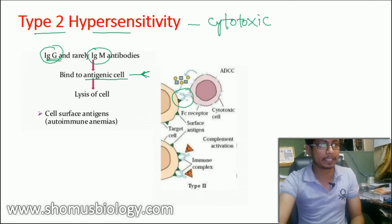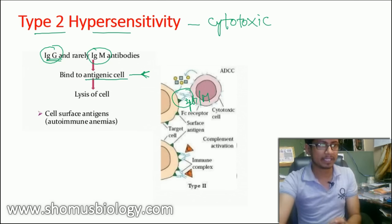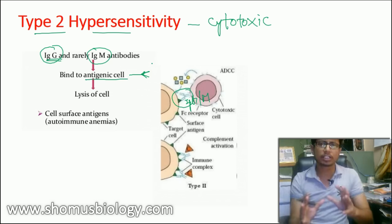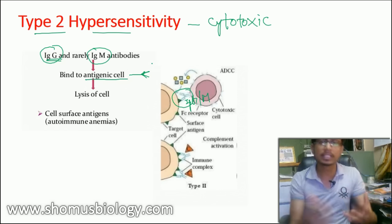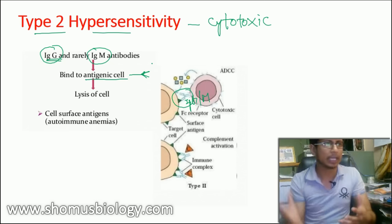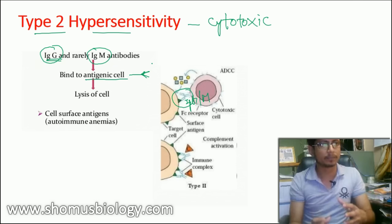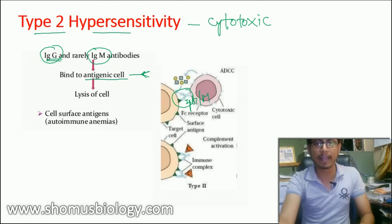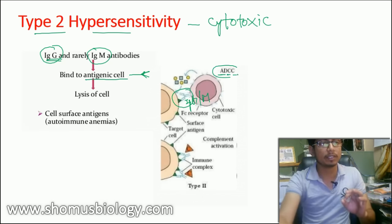Our body's cytotoxic or killer cells recognize the target cell coated with IgG or IgM, then release chemical factors to destroy it. This is the destruction of self cells — though the self cell is healthy, the destruction signal is active, and that is the problem. This process is called antibody-dependent cellular cytotoxicity, or ADCC.